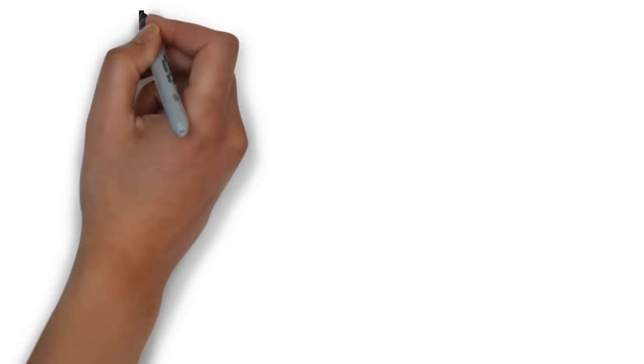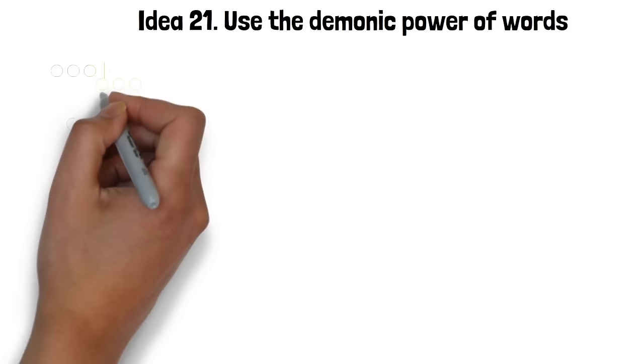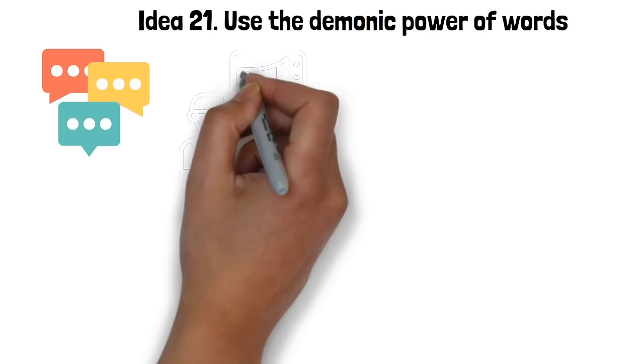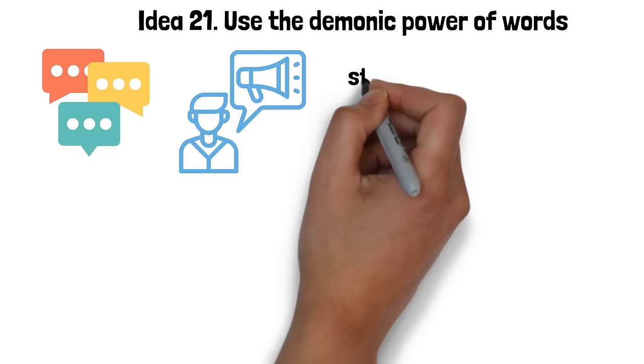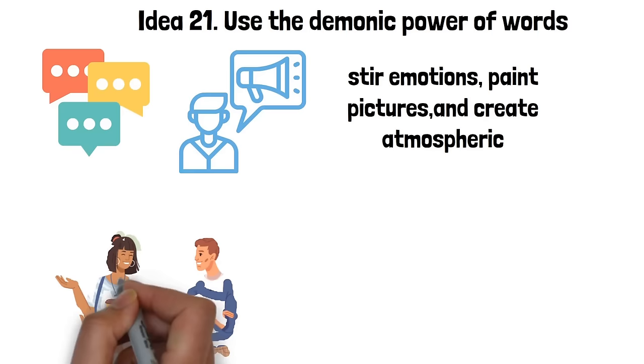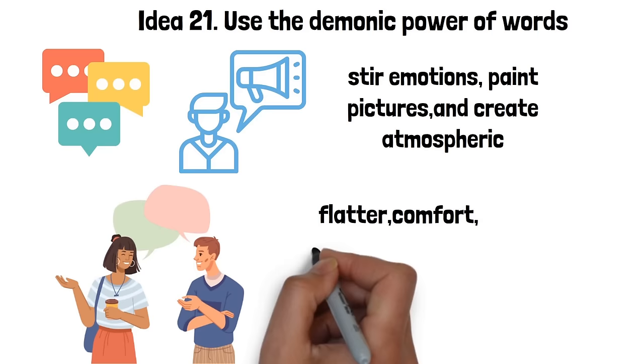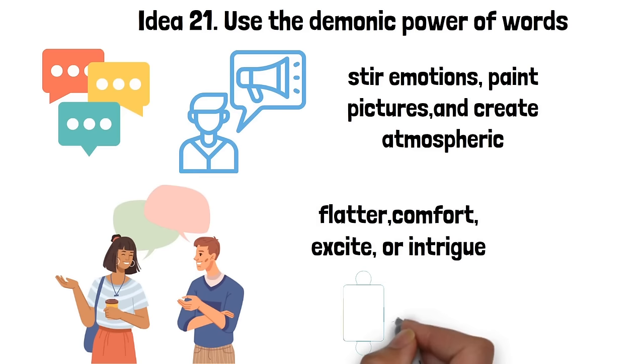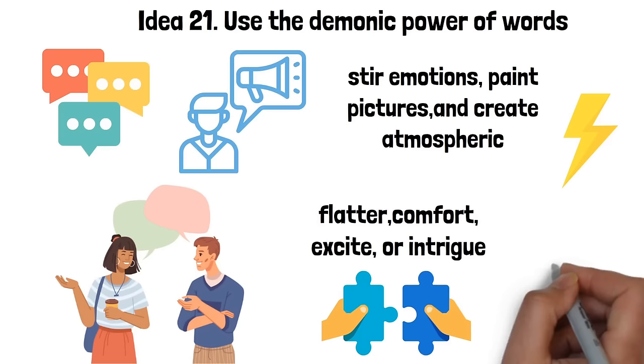Idea 21. Use the demonic power of words. The concept of using the demonic power of words involves leveraging language as a tool for seduction. Words have the ability to captivate, charm, and influence. They can stir emotions, paint pictures, and create atmospheres. This idea revolves around mastering the art of conversation, using carefully chosen words and phrases to trigger desired responses. For example, you can use words to flatter, comfort, excite, or intrigue the other person. The key here is to be mindful of the effect your words have, carefully selecting your language to match the mood and expectations of the other person. The demonic power refers not to anything negative or harmful, but rather to the mesmerizing power words can wield when used skillfully. It's about making your words enchanting, irresistible, and memorable.